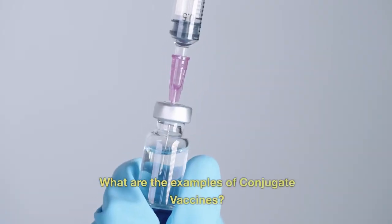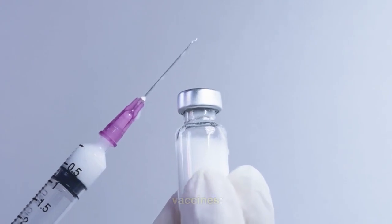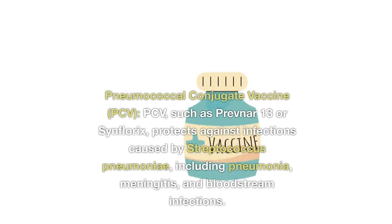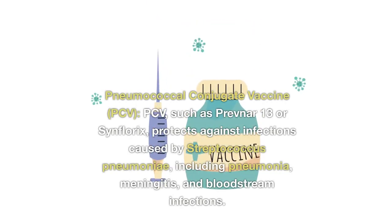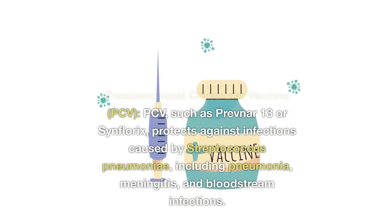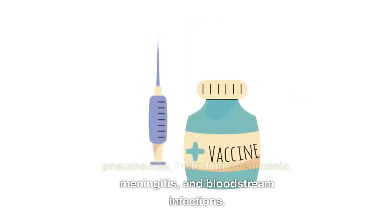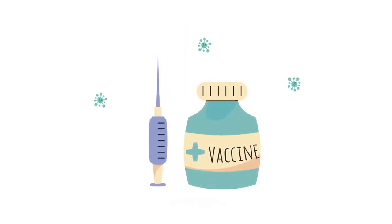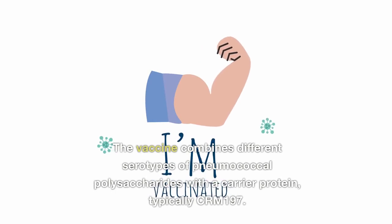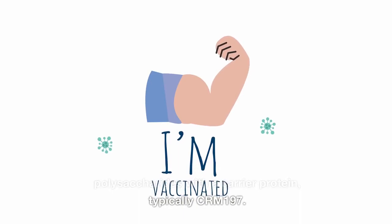What are the examples of conjugate vaccines? Here are some examples. Pneumococcal conjugate vaccine (PCV), such as Prevnar-13 or Synflorix, protects against infections caused by Streptococcus pneumoniae, including pneumonia, meningitis, and bloodstream infections. The vaccine combines different serotypes of pneumococcal polysaccharides with a carrier protein, typically CRM-197.